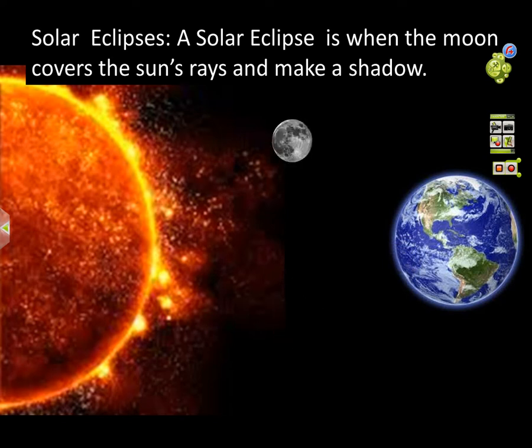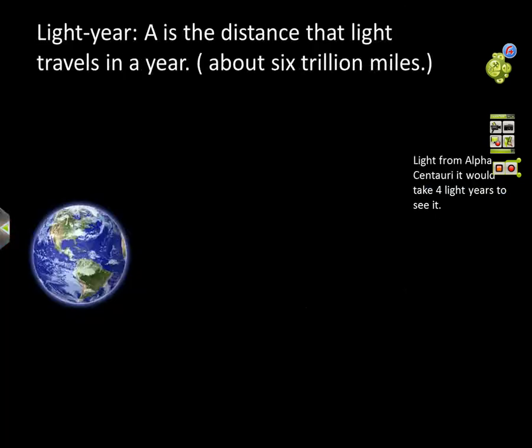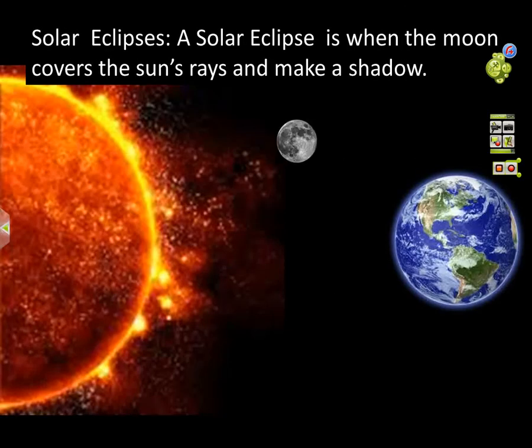So how did you do that? Whenever we make the moon go down, the moon's shadow goes with it, so then it puts the shadow on the earth. That's really good.